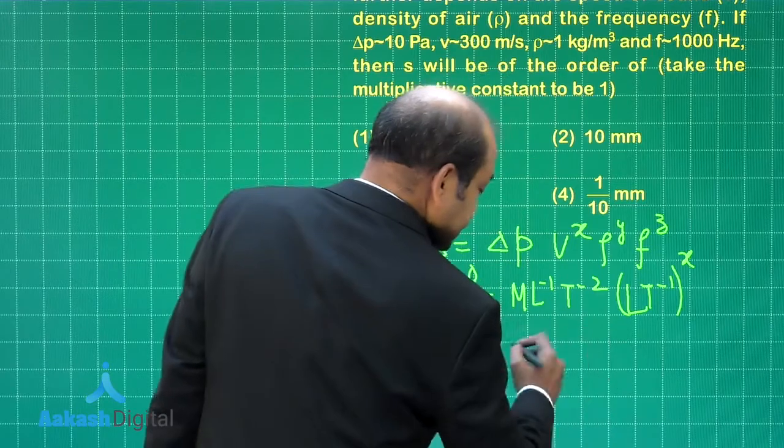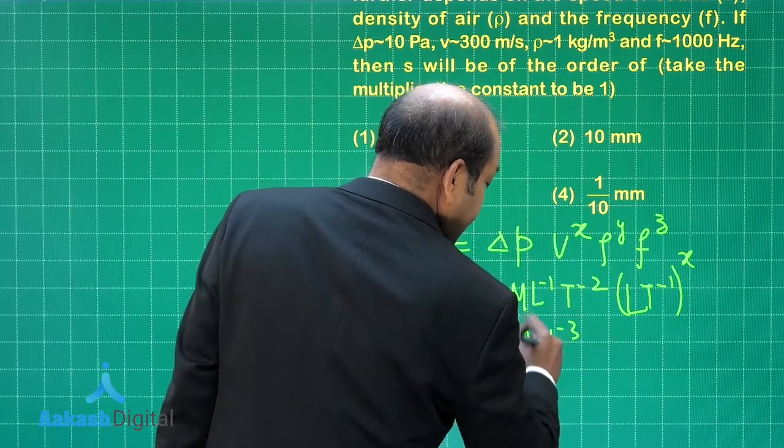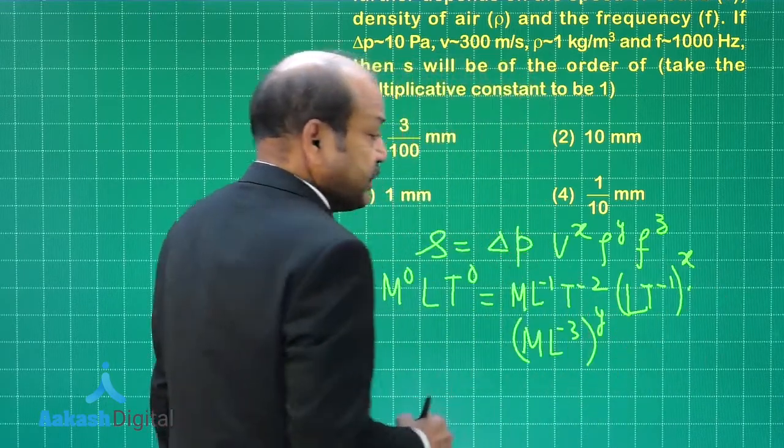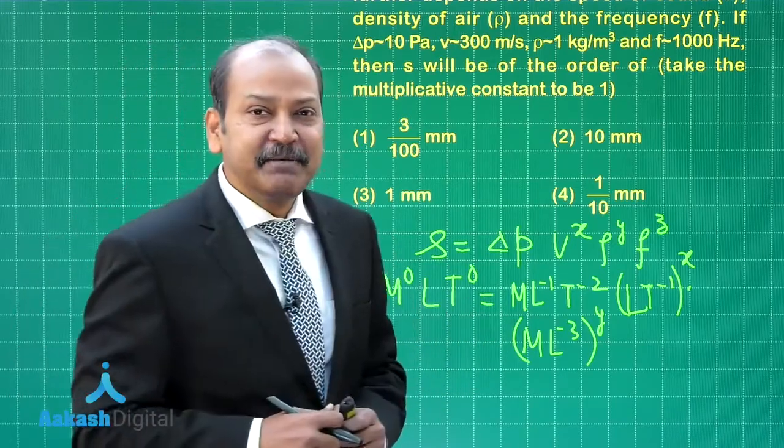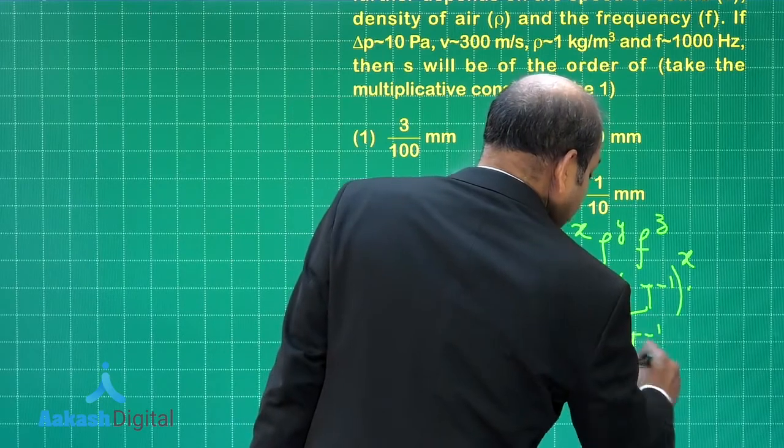That means we write here, let us continue writing here, ml⁻³ to the power y. Of course there is a multiplication sign here and finally frequency has dimensions t⁻¹. So that means t⁻¹ to the power z.